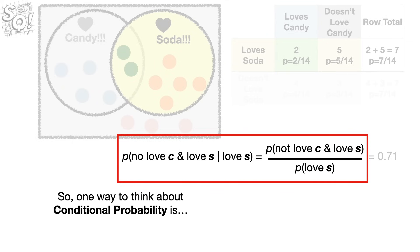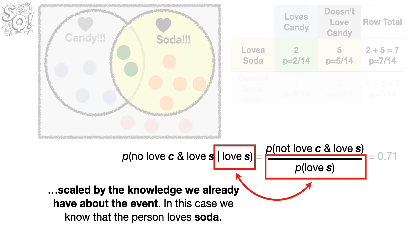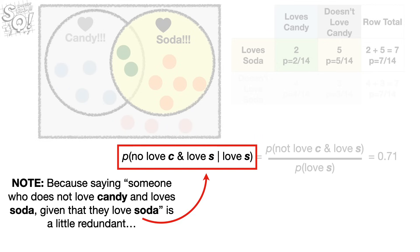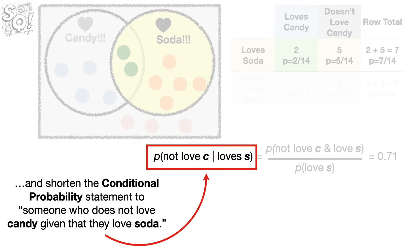One way to think about conditional probability is the probability that an event will happen — in this case, the probability that we meet someone who does not love candy but loves soda — scaled by the knowledge we already have about the event, which in this case is that the person loves soda. Note: because saying someone who does not love candy and loves soda, given that they love soda, is a little redundant, many people omit writing out the 'and loves soda' part, and shorten the conditional probability statement to 'someone who does not love candy, given that they love soda.'